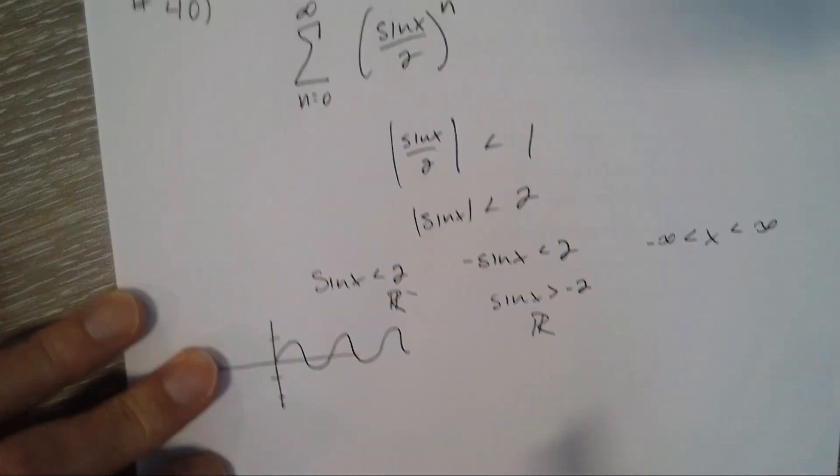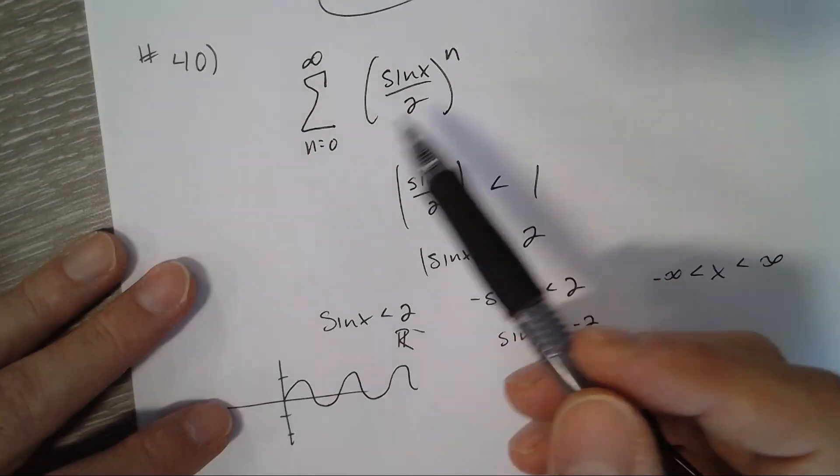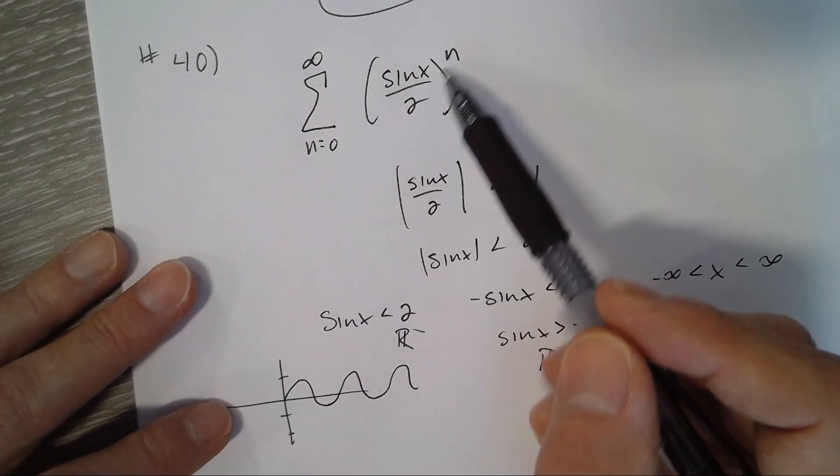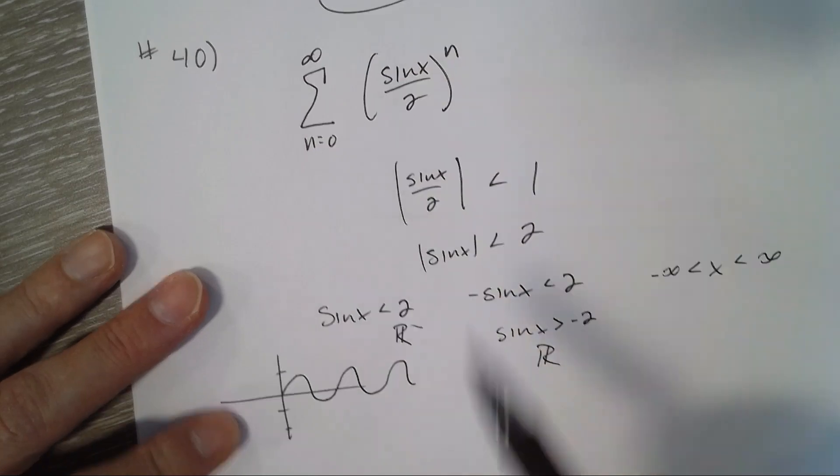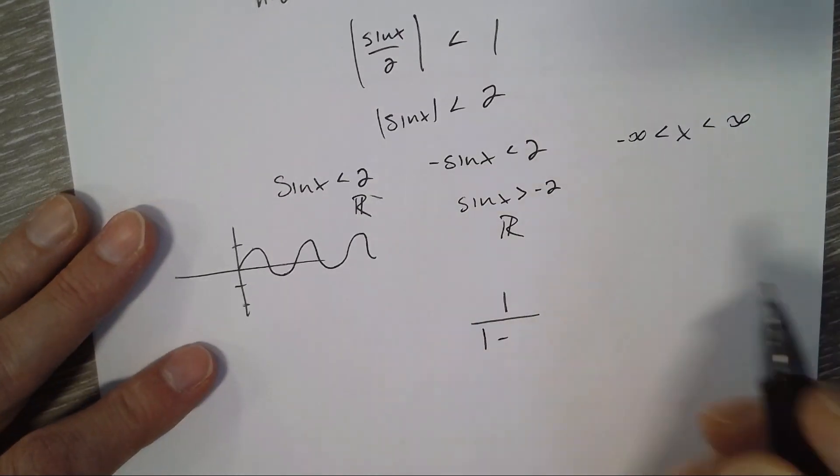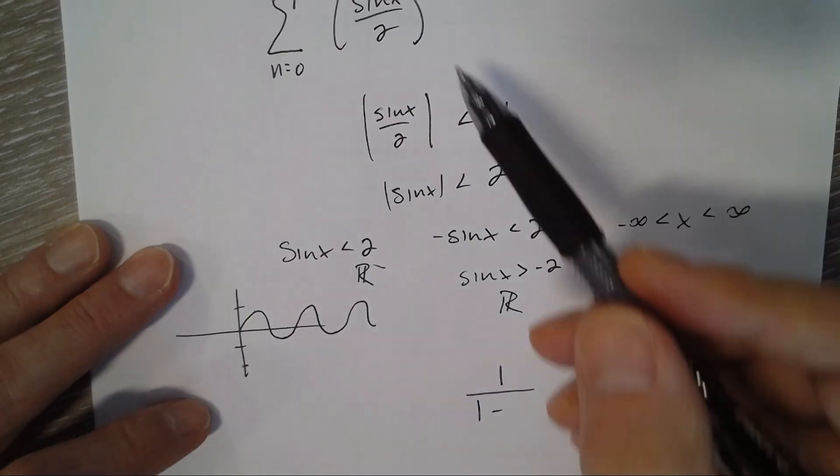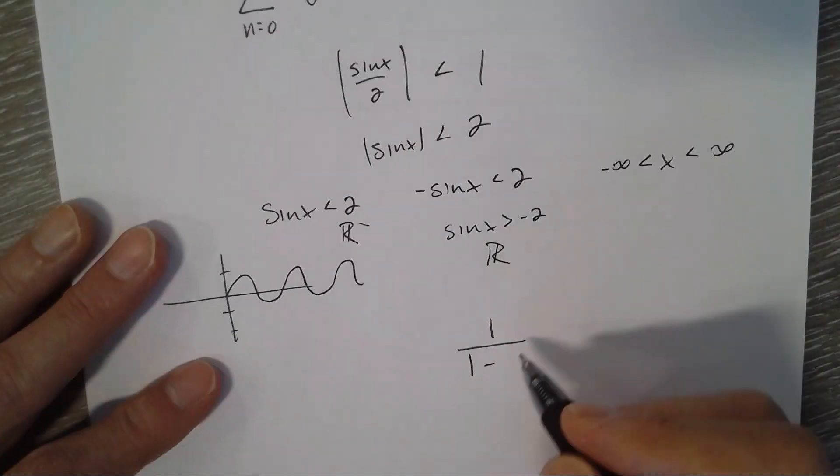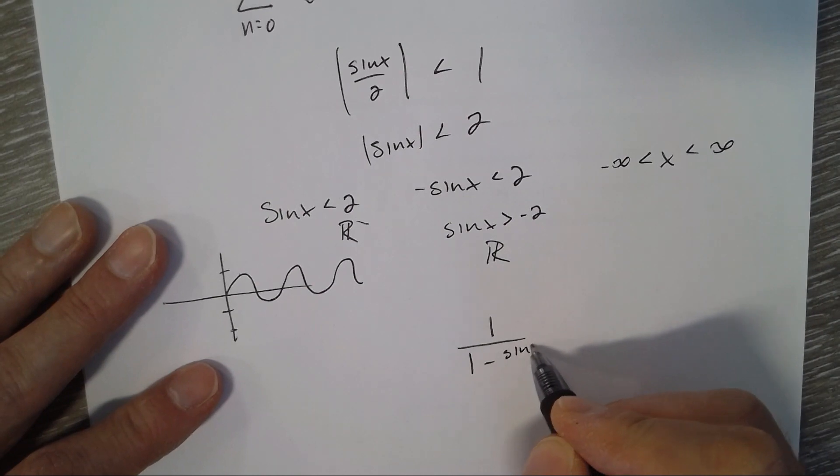Sum as a function of x, we use our initial formula. So I plug in 0, I get anything to the 0 is 1. So it's 1 over 1 minus r, which is whatever you're taking to the nth power. So it's sin x over 2.